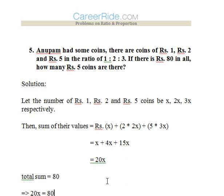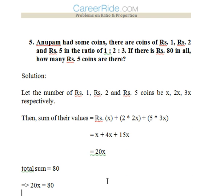Fifth question: Anupam had some coins. There are coins of rupees 1, rupees 2, and rupees 5 denomination in the ratio 1 is to 2 is to 3. Now if total money is 80, then we have to find out how many rupee 5 coins are there with Anupam.